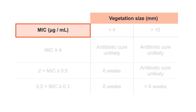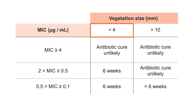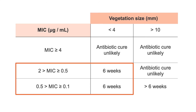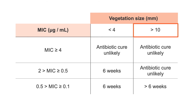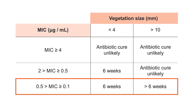For example, if the vegetation is less than 4 mm, the MIC should be between 0.1 and 2 micrograms per millilitre. If the MIC was more than 4, antibiotic cure would be unlikely. And if the vegetation is more than 10 mm, the MIC has to be between 0.1 and 0.5 micrograms per millilitre, or antibiotic cure would be unlikely.